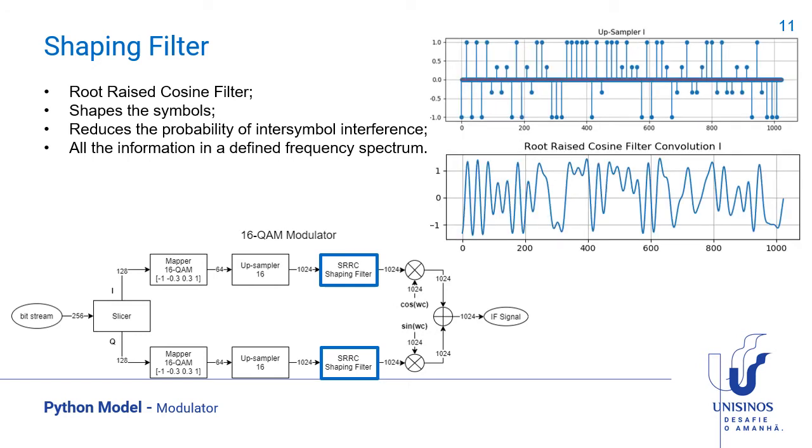The consequence of that is that the symbols are spread in the time domain. This filter also guarantees that the current symbol has an amplitude near zero at the peak of the next symbol, reducing the probability of inter-symbol interference. This figure is the signal before the convolution with the filter and after the convolution.